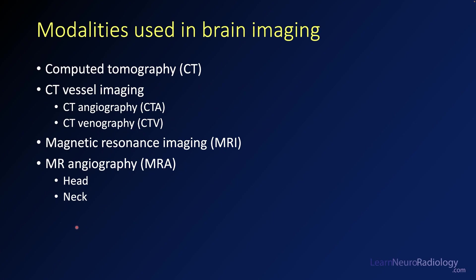The modalities you'll encounter in brain imaging are varied, but the main workhorses are CT (computed tomography) and MRI (magnetic resonance imaging). You can do conventional structural imaging, but we'll also do vessel imaging or angiography — looking at arteries is called angiography, and looking at veins is called venography. You can do these with both CT and MRI, including MRA or MR venogram of the head or neck, to see the blood supply to the brain.